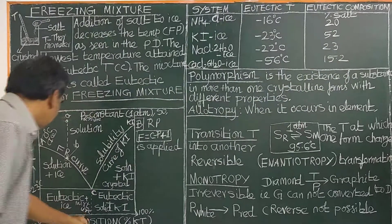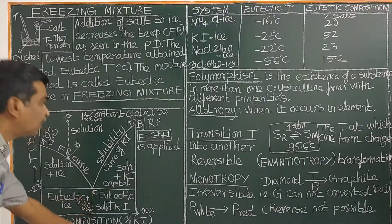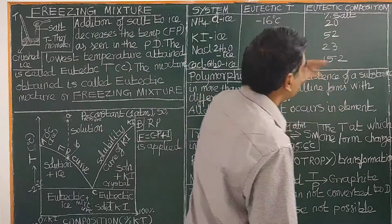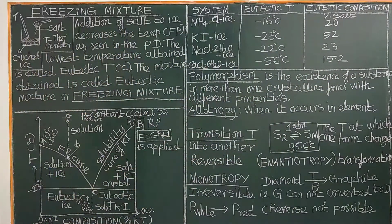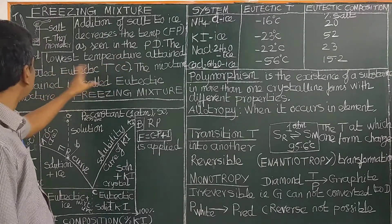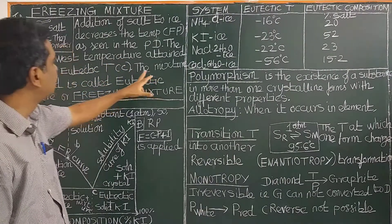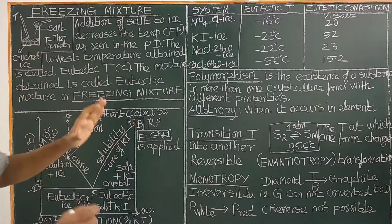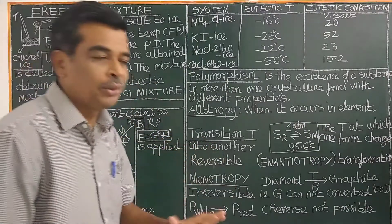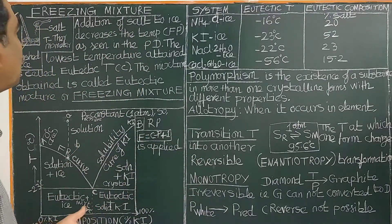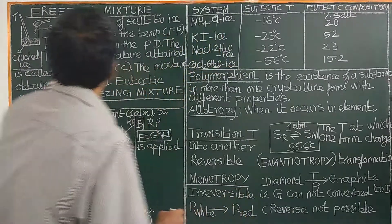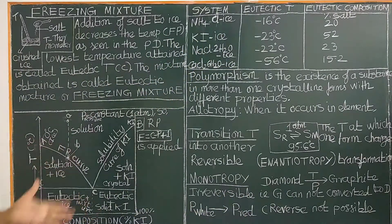And the composition is 52 percent. Salt-water at that concentration is the eutectic composition. The lowest temperature obtained is called the eutectic temperature. The mixture obtained is called the eutectic mixture — that is the freezing mixture. A salt-to-ice mixture is the freezing mixture.